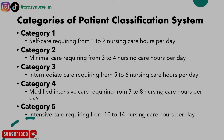Here are the categories of the patient classification system. Each patient is categorized based on their level of acuity. Category 1 is self-care, requiring 1–2 nursing care hours per day. Category 2 is minimal care, requiring 3–4 hours per day. Category 3 is intermediate care, requiring 5–6 hours per day. Category 4 is modified intensive care, requiring 7–8 hours per day. Category 5 is intensive care, requiring 10–14 nursing care hours per day.